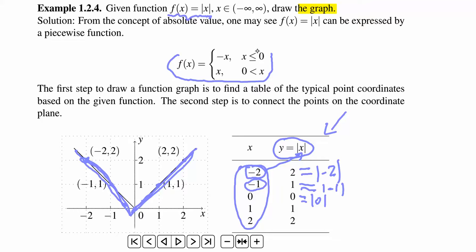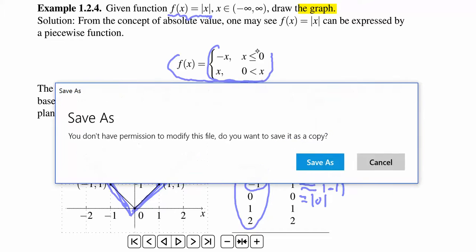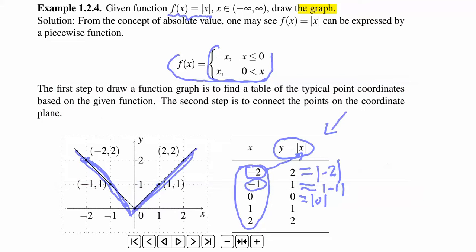This is like piecewise function. We basically translate this absolute value function into two parts.